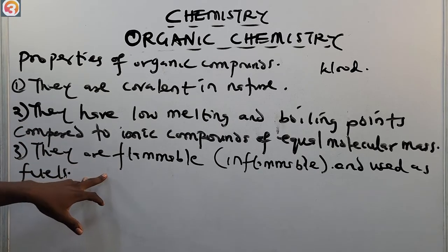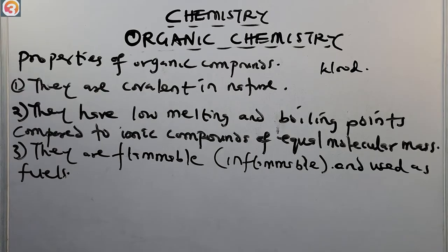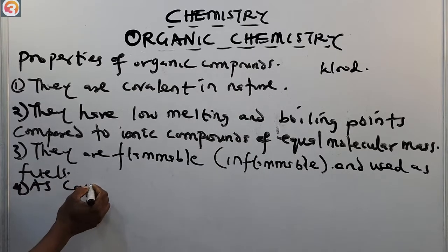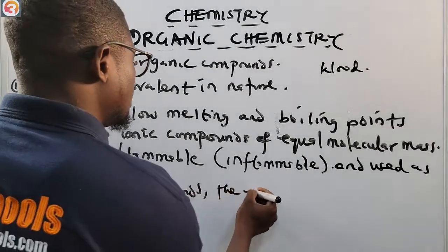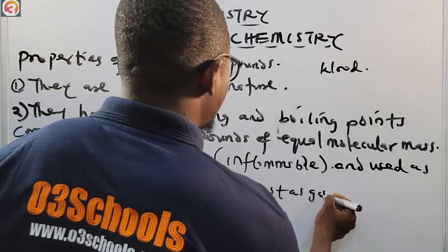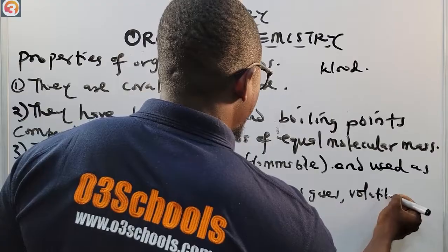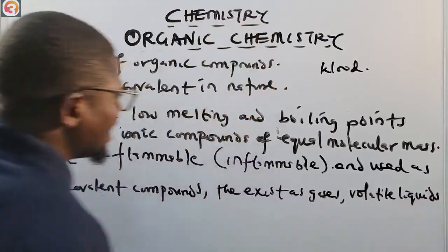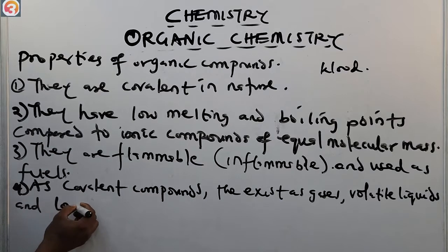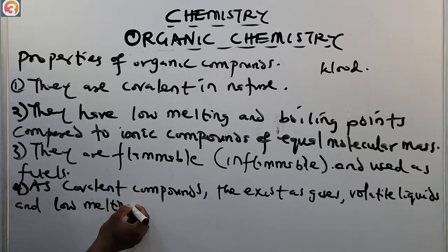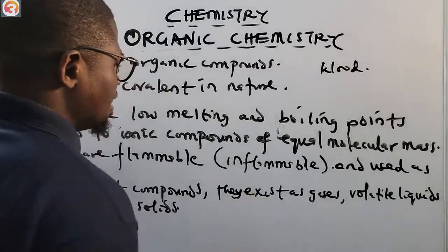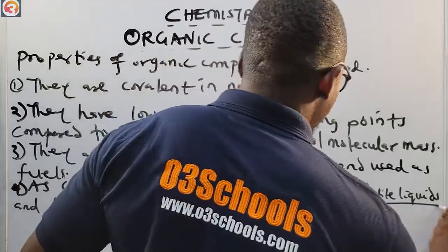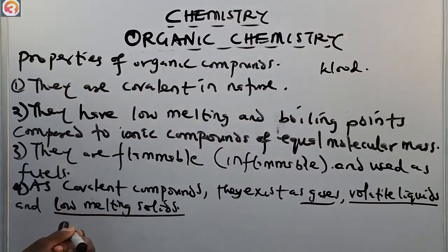Property number four: as covalent compounds, organic compounds exist as gases, volatile liquids, or low-melting solids. Because organic compounds are covalent in nature, they take these physical forms.